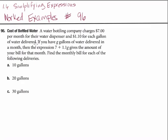Let's continue reading. If you have G gallons of water delivered in a month, then the expression 7 plus 1.1G gives the amount of your bill for that month.